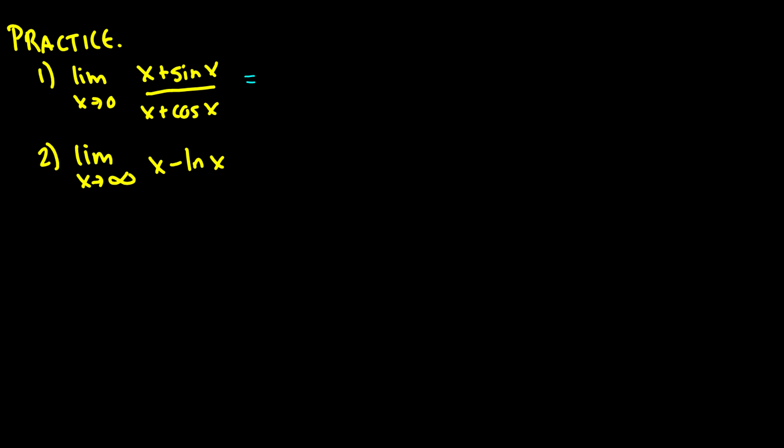We have 0 plus sin(0), which is 0, over 0 plus cos(0), which is 1. That's 0/1, which equals 0.